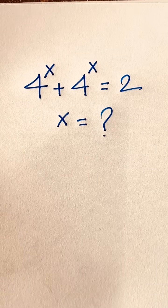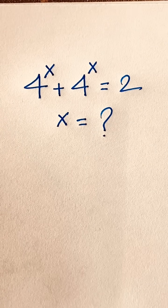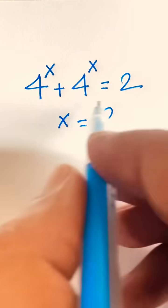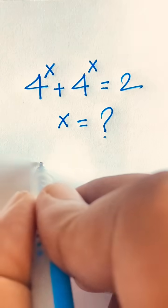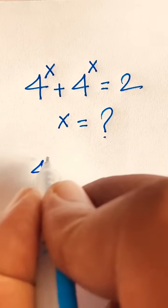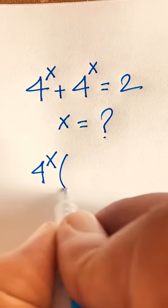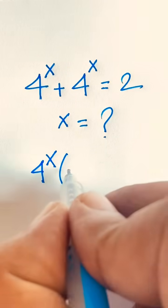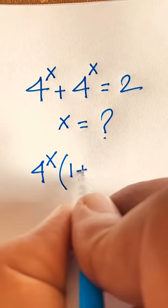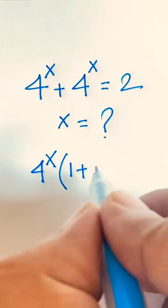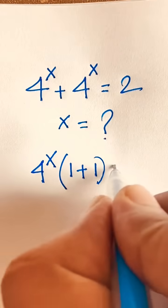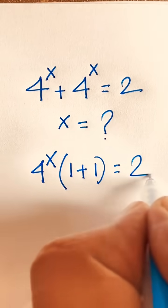2 to the power x plus 4 to the power x is equal to 2. x is equal to what? How to solve this question? In this expression, 4 to the power x is common. Dividing, this gives 1, and this gives 1, so it equals 2.